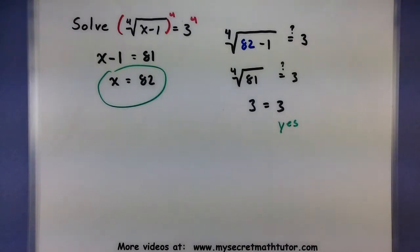Now let's look at one that's a little bit more complicated to show that the same process works out. Really look at the index of the radical, raise both sides to that power, and solve the remaining equation.